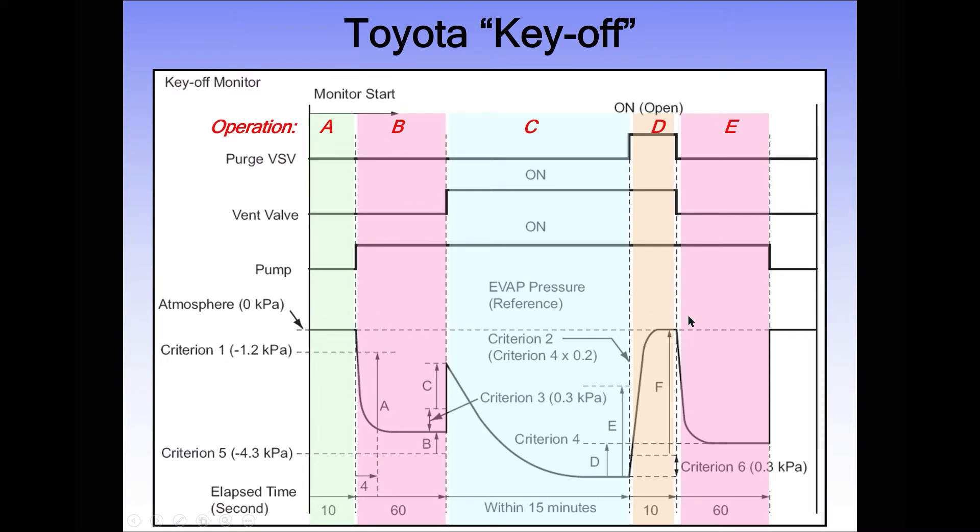Here's a graphical layout of how this test runs. You can see it takes several minutes, with seconds along the bottom showing the operation of individual components: purge valve, vent valve, pump, and pressure sensor. For the first 10 seconds or maybe a minute, the system is at rest with atmospheric pressure in the tank. Purge valve off, vent valve off, pump off.